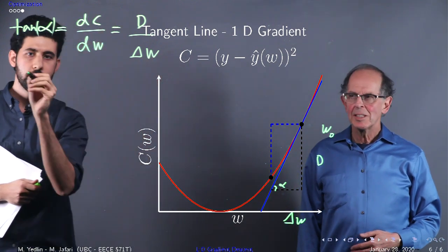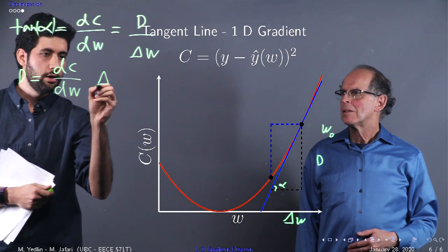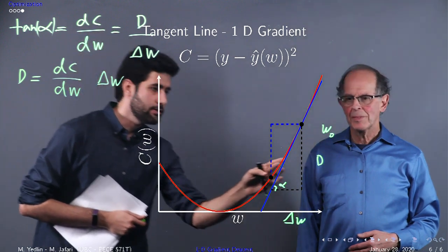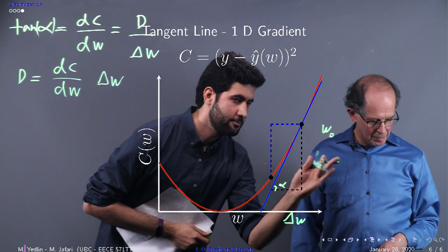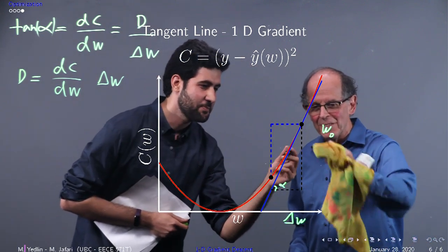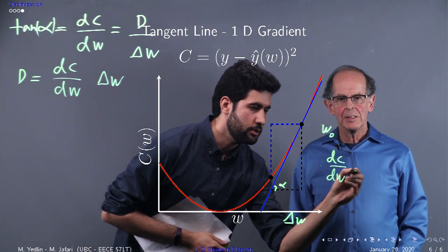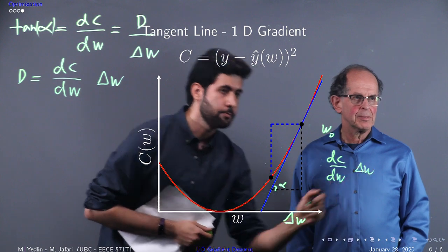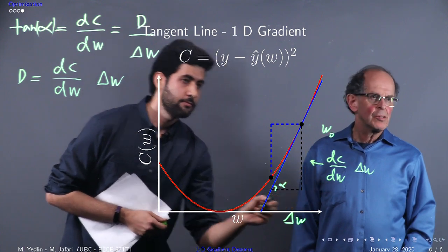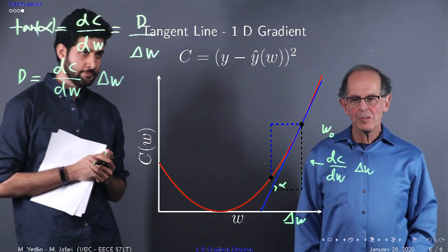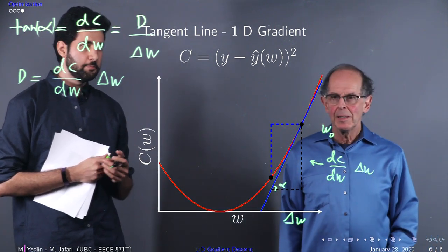Alpha equals dC/dW tangent, which is equal to d over delta w. So basically that d is equal to dC/dW times delta w. We have a triangle whose base is delta W here, and whose height is given by this expression.